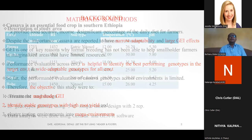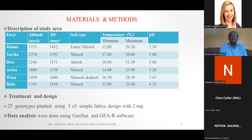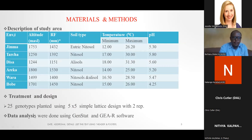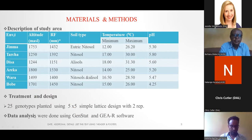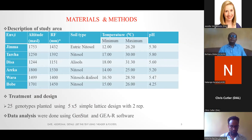The study area is variable in altitude, rainfall, soil type, temperature, and pH value. For treatment and design, 25 genotypes were planted using a 5x5 lattice design with two replications. Data analysis was done using GenStat and R software.